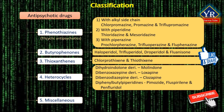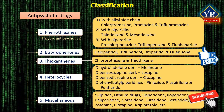Heterocyclics include dihydroindolones — molindone is an example; loxapine is a dibenzoxazepine; and clozapine is a dibenzodiazepine derivative. Diphenylbutyl piperidines include pimozide, fluspiriline, and penfluoridol. Miscellaneous antipsychotics include sulpiride, lithium drugs, and other compounds such as risperidone, iloperidone, paliperidone, ziprasidone, lurasidone, sertindole, zotepine, clozapine, olanzapine, aripiprazole, etc.